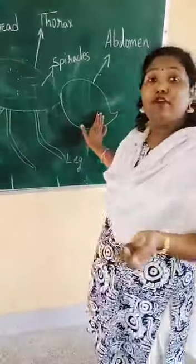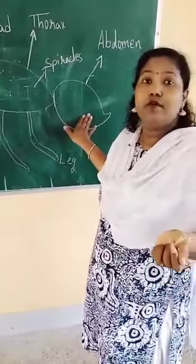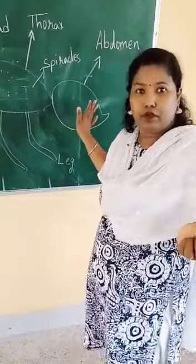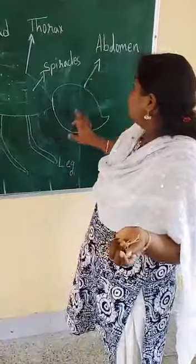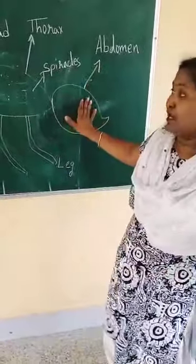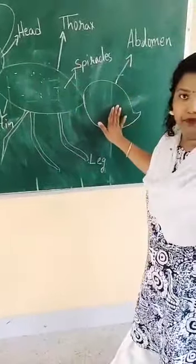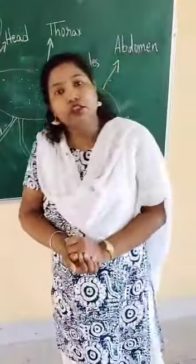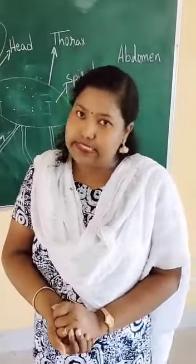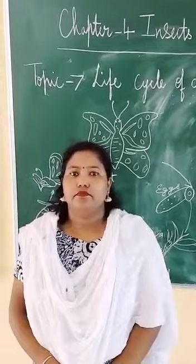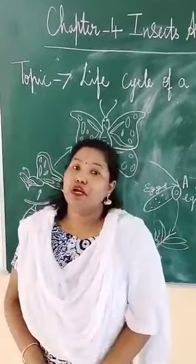Now we have the third part. The third part is called abdomen. So this is the third part. The first part is head, then thorax, and abdomen. So children, I hope you have learnt the different parts of an insect.